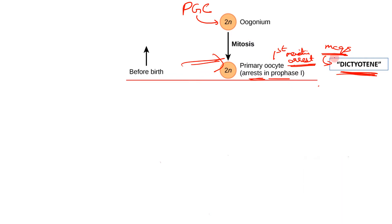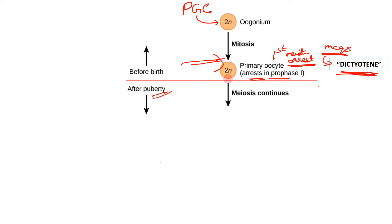The primary oocytes remain in this dicteotene — the diplotene arrest phase — for years in the female, until puberty. After puberty is attained, the first meiotic arrest is released and meiosis continues.